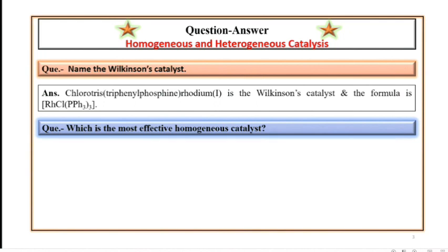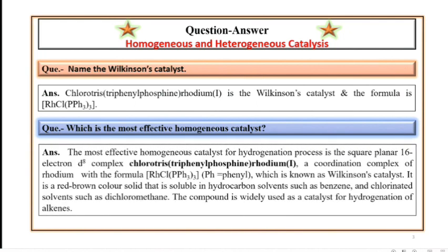Which is the most effective homogeneous catalyst? The most effective homogeneous catalyst for hydrogenation process is the square planar 16-electron d8 complex chlorotris triphenylphosphine rhodium(I), a coordination complex of rhodium with the formula RhCl(PPh3)3, which is known as Wilkinson's catalyst. It is a red-brown color solid that is soluble in hydrocarbon solvents such as benzene and chlorinated solvents such as dichloromethane. The compound is widely used as a catalyst for hydrogenation of alkenes.